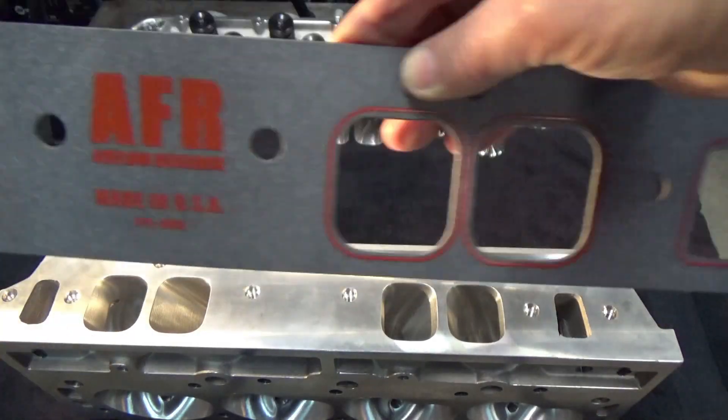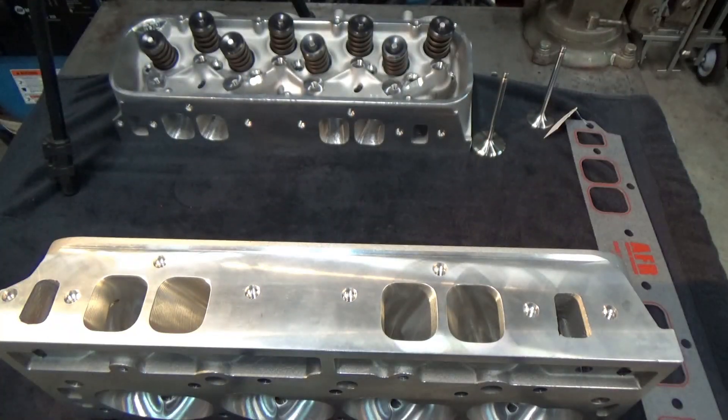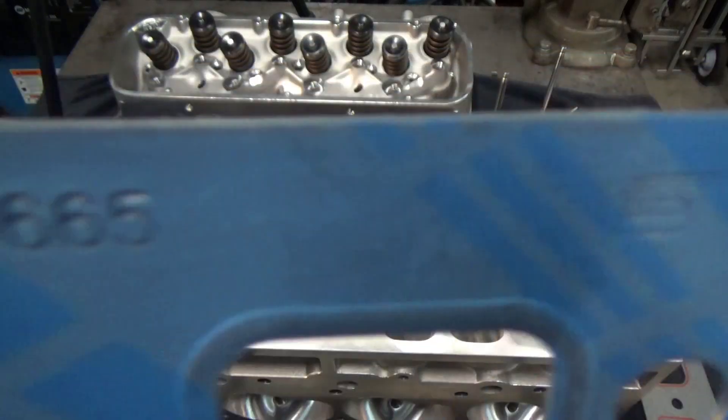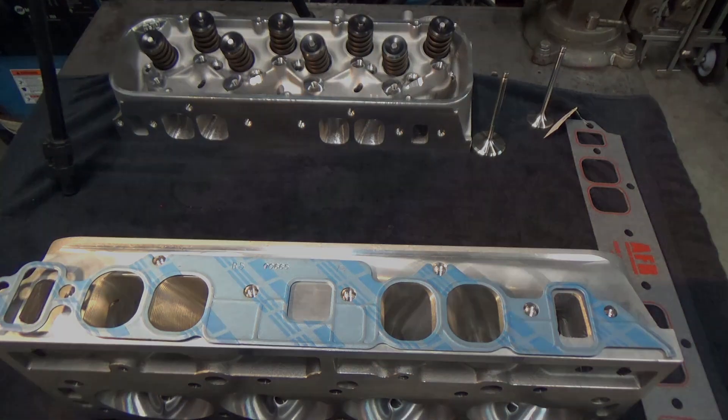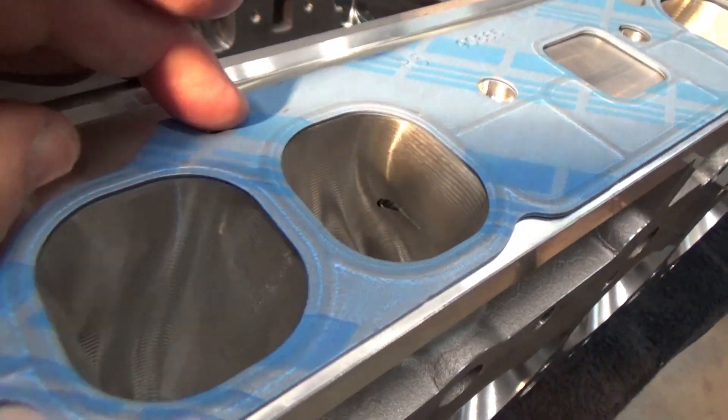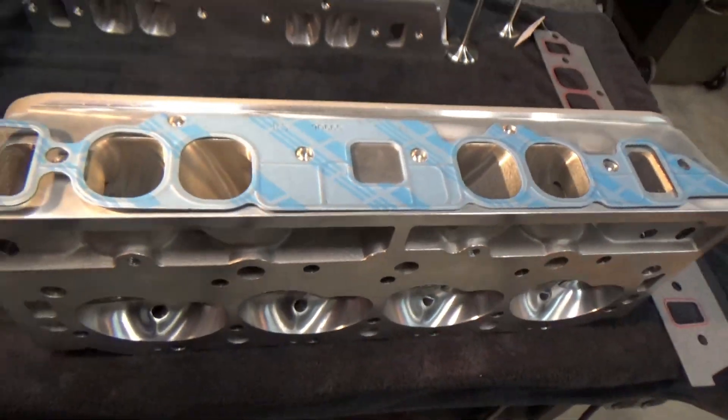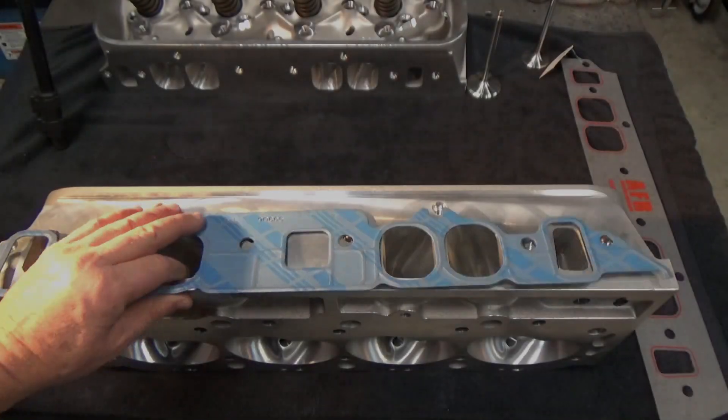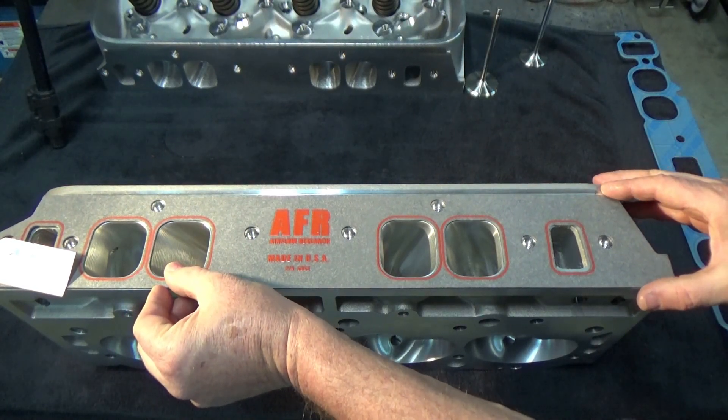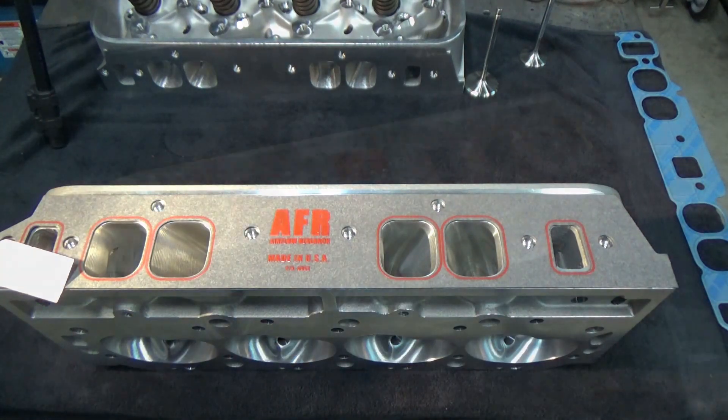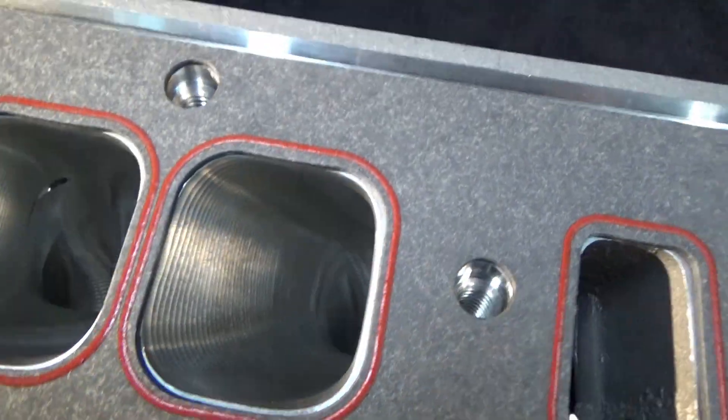Now the intake gasket, AFR offers a gasket for these particular heads but also if you have like the Fel-Pro gasket that comes with a lot of gasket sets, you can lay it on there and it's not a perfect, you know, the edges. I think you could modify it probably to make it work, but I just decided to go ahead and go with the AFR gasket because it fits so well and that's what I'll be using when I port the intake that I have for this engine. It just lines up really really nice, looks good.